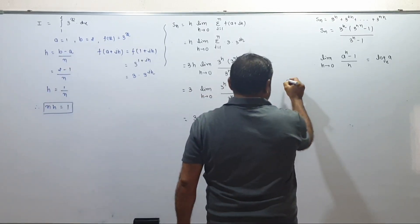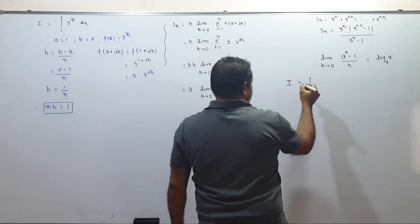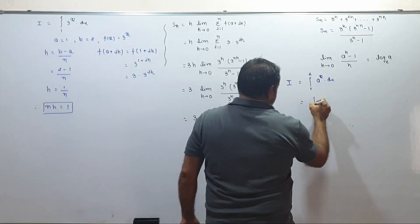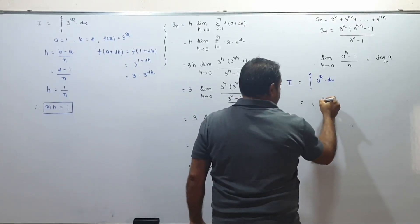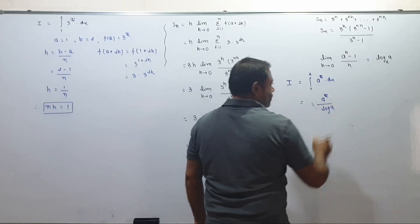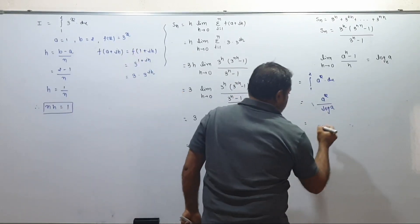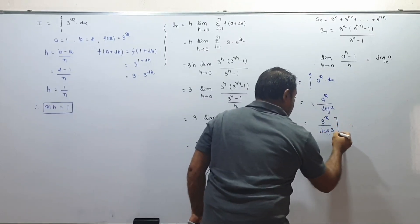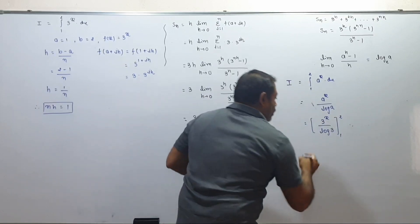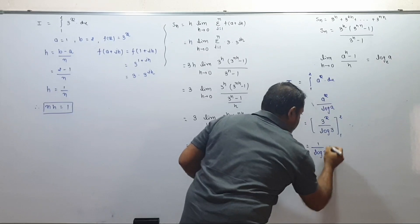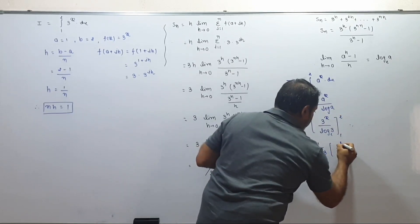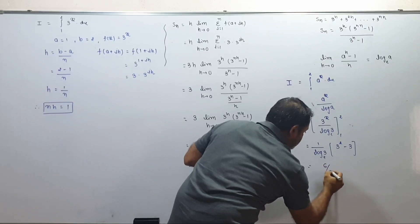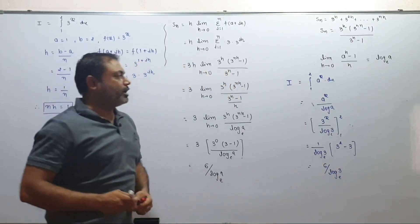Shortcut method: I equals integral from 1 to 2 of 3^x dx. Antiderivative of a^x is a^x / log_e(a). So 3^x / log₃(e) from 1 to 2 equals (3² minus 3¹) / log_e(3) equals (9 minus 3) / log_e(3) equals 6 / log_e(3). This completes the lecture. Thank you.